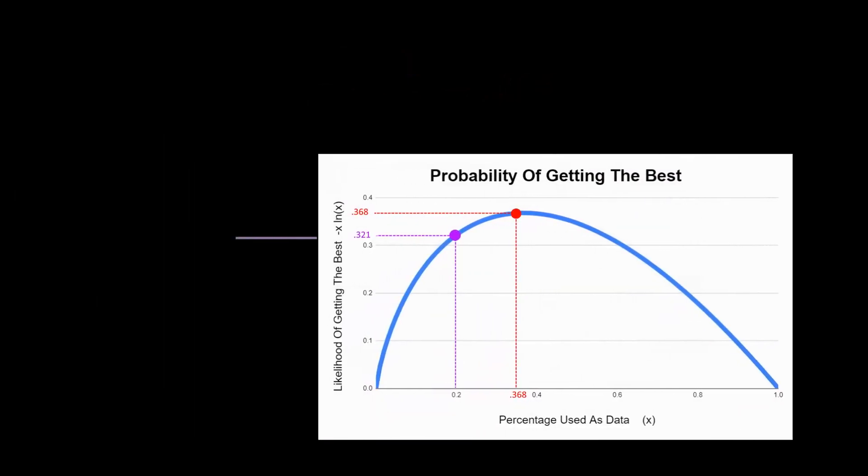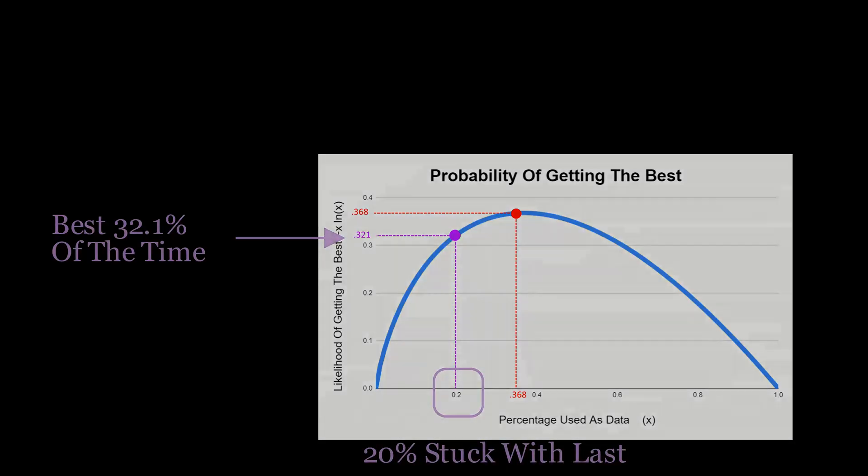Let's say that you investigate 20% before picking. In that case, you get the absolute best 32.1% of the time, but only get stuck with the last sample 20% of the time. In real life, that's probably a good tradeoff. This is Dubious Insights, thanks for watching.